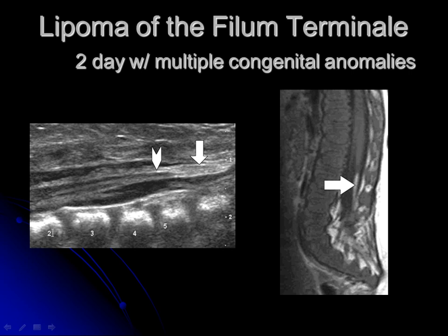Let's look at some abnormal cases. This is a two-day-old with multiple congenital anomalies referred for spine ultrasound. All these cases involve young infants where we didn't wait until two weeks because they had high pretest probability of being abnormal. On the ultrasound looking from L2 to L5, the spinal cord is abnormally elongated and all low in position — it's hard to tell where the cord ends and the conus begins. It's also hard to tell where the conus ends and the filum begins because it's all thickened with echogenic material. Fat is echogenic on ultrasound, so this is suggestive of a lipoma, which was confirmed on MRI.